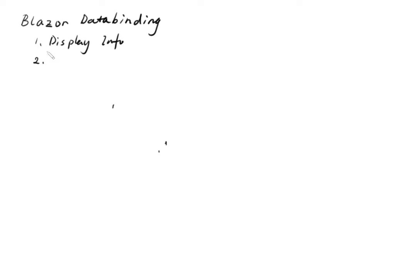For any software that has a UI, the software needs to do two things. The first thing is to display information. The second thing is to manipulate. And if we look at the data flow for display information, we have a UI and we have data. I'm just using a database symbol to represent data, so it flows from the database to the UI.